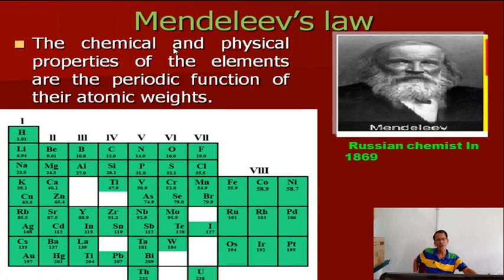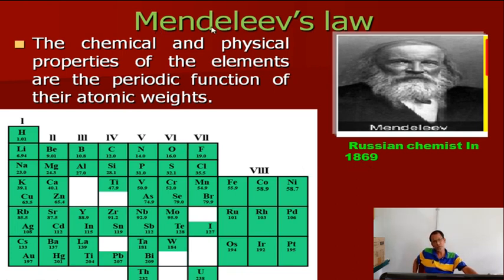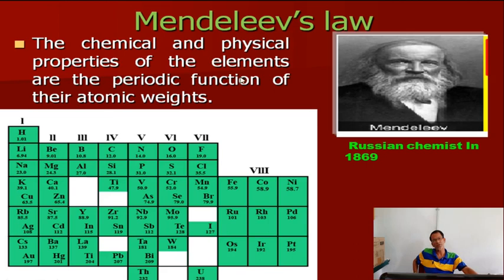Next is Mendeleev's Law, which was very important. He opened the eyes of modern scientists on how to arrange elements in tabular form. Russian chemist Mendeleev, in the year 1869, formed the Mendeleev Periodic Table. According to this table, the physical and chemical properties of elements are the periodic function of their atomic weights. He arranged the elements in increasing order of atomic mass, and the physical and chemical properties of elements depend upon atomic mass — with increasing atomic mass, the properties change.